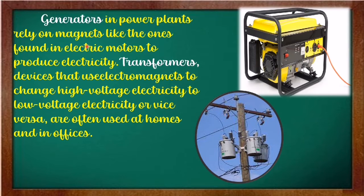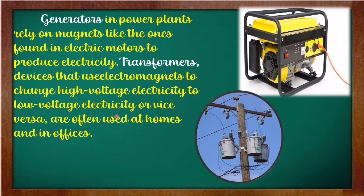Generators in power plants rely on magnets, like the ones found in electric motors, to produce electricity. This is an example of a generator, and this one is the transformer. You can see these at the Meralco poles. Transformers are devices that use electromagnets to change high voltage electricity to low voltage electricity or vice versa. They are often used at homes and in offices.